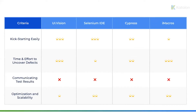When you do test automation, test effects are inevitable. However, with the option to execute from command line and execute with different datasets, UiVision and iMacros make it easier for users. Cypress is a little harder to work with since it only supports executing from command line and not with datasets. And Selenium IDE does not support executing with different data at all.